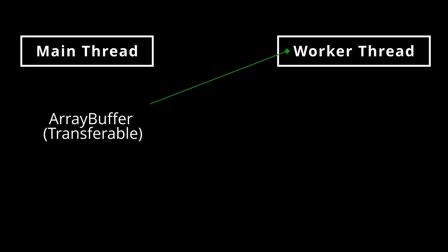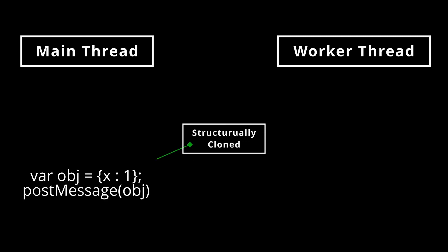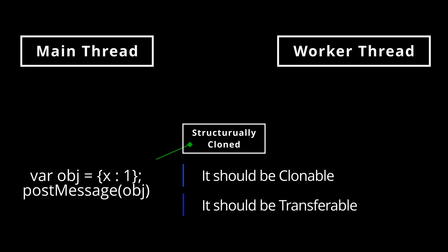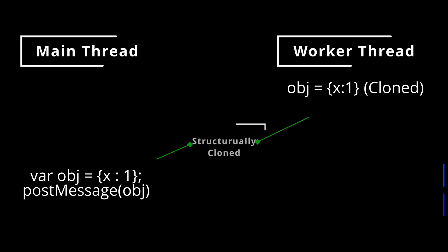But we can pass transferable objects to different contexts without creating separate copies of the resources they're using. Let's understand how message passing works in the context of Web Workers. Whenever you send objects from one context to another via postMessage, the objects or data are structurally cloned. During the structured cloning algorithm, it checks if the object is not structurally clonable — it throws an error. Otherwise, if the transferred object is not transferable, it throws an error; otherwise it proceeds with the cloning.